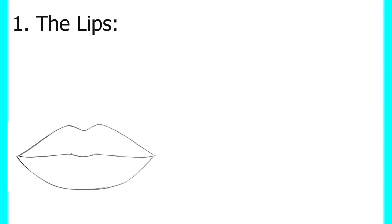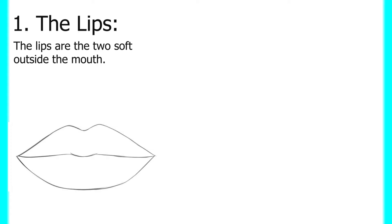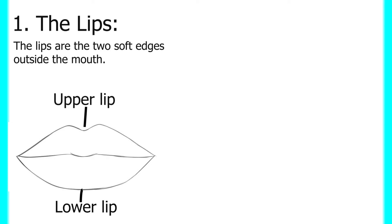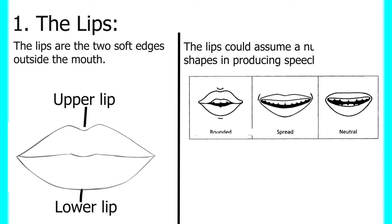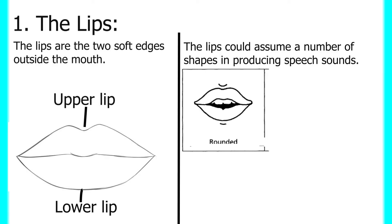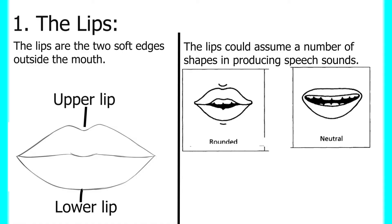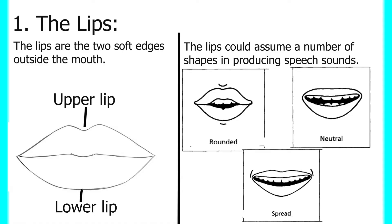Let's begin with the lips. The lips are the two soft edges outside the mouth. They are divided into two: the upper lip and the lower lip. The lips can assume a number of shapes in producing speech sounds — they could be rounded, neutral, or spread. The lips play a crucial role in forming certain sounds in English.